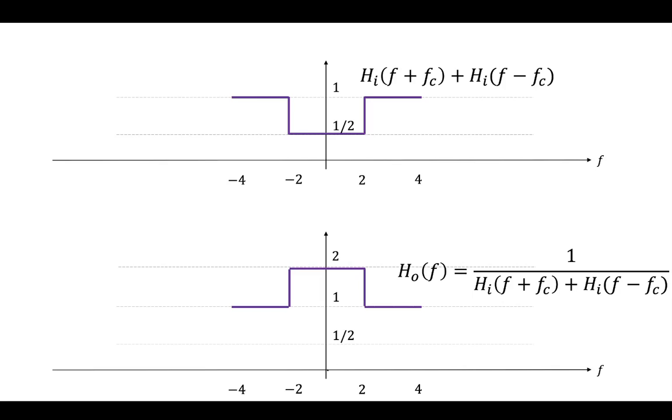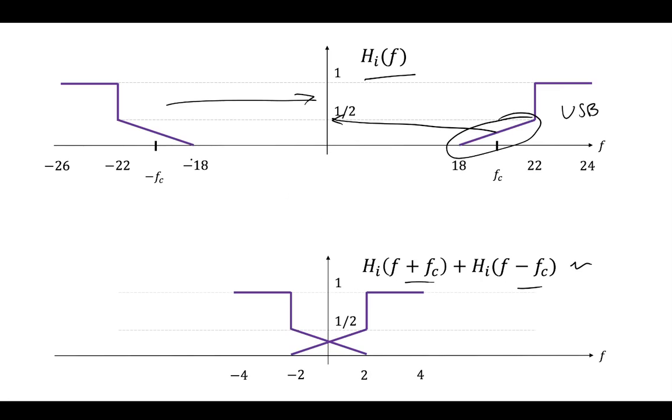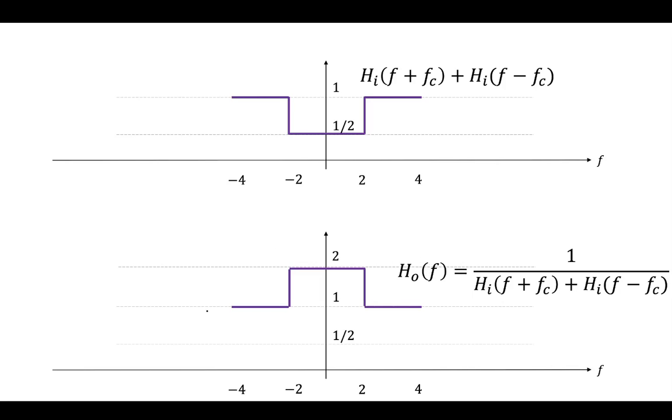So from the section between minus 2 and 2, we can see that 1 over 1 half is 2, and above that, 1 over 1 is equal to 1. So for a very simple vestigial sideband filter, we can see how you could, if you know what the input filter is, define the output filter, how you could design it.